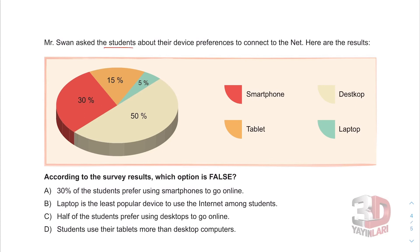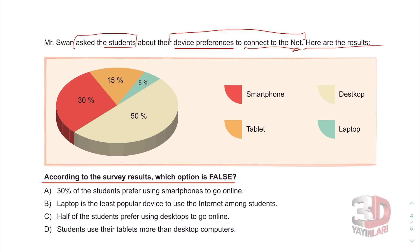Mr. Swan asked the students about their device preferences to connect to the net. Here are the results. According to the survey results, which option is false? Option A: Thirty percent of the students prefer using smartphones to go online. Let's see — smartphones: yes, they are indeed thirty percent. True.